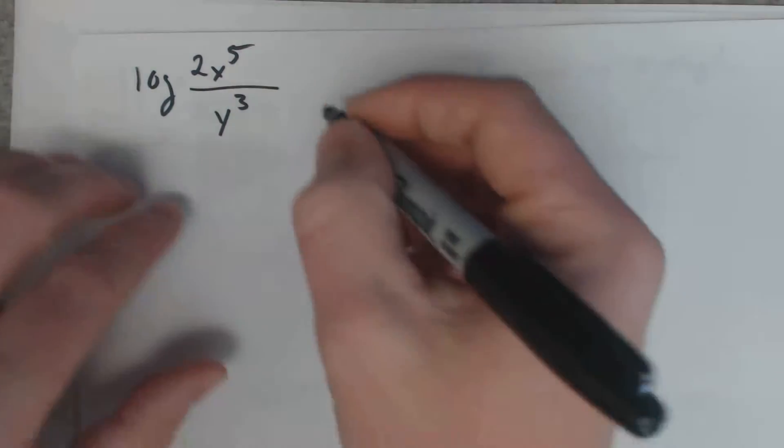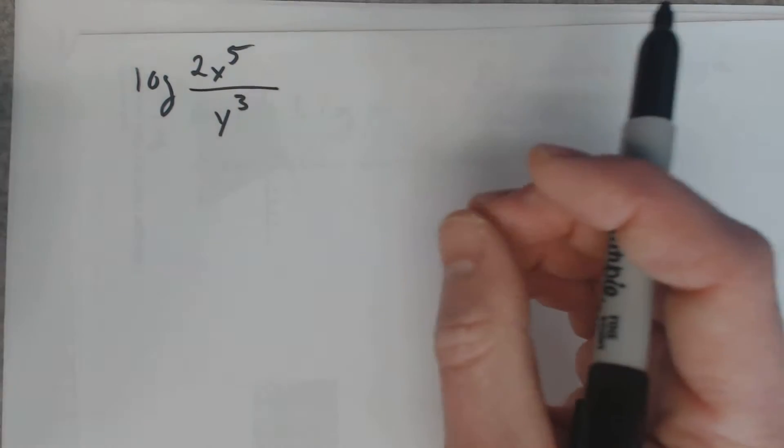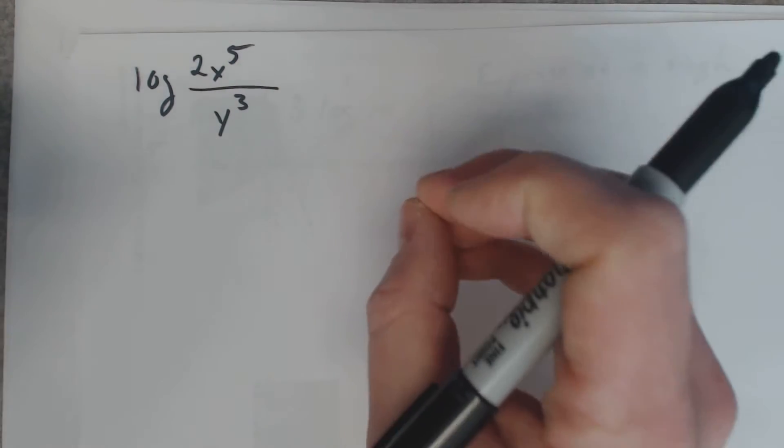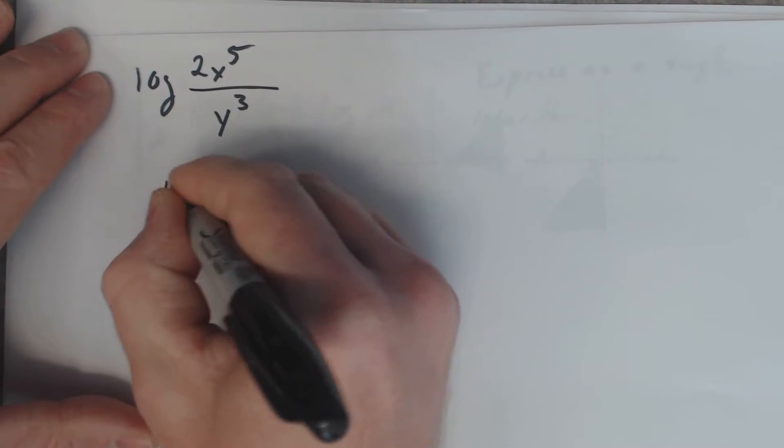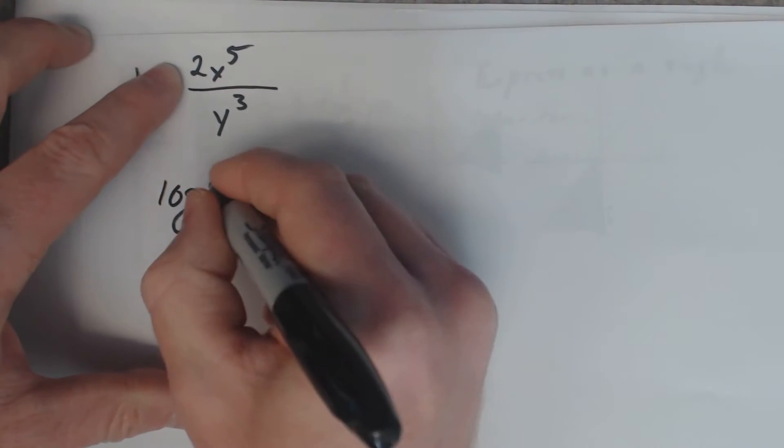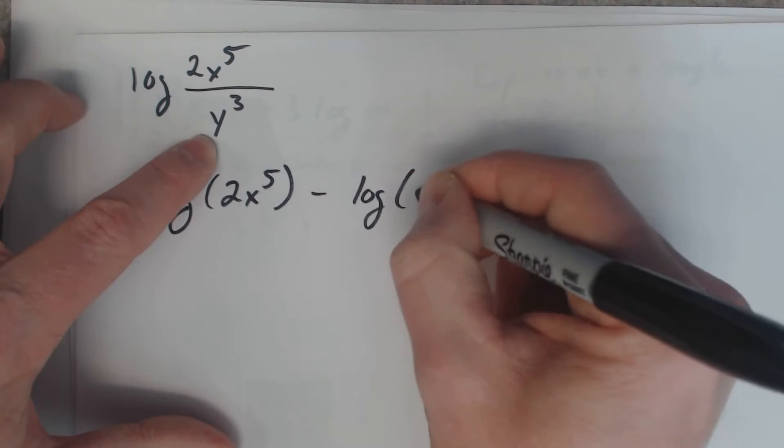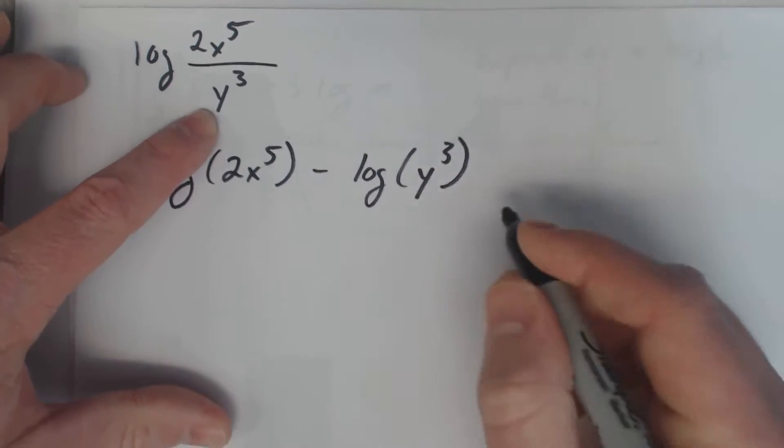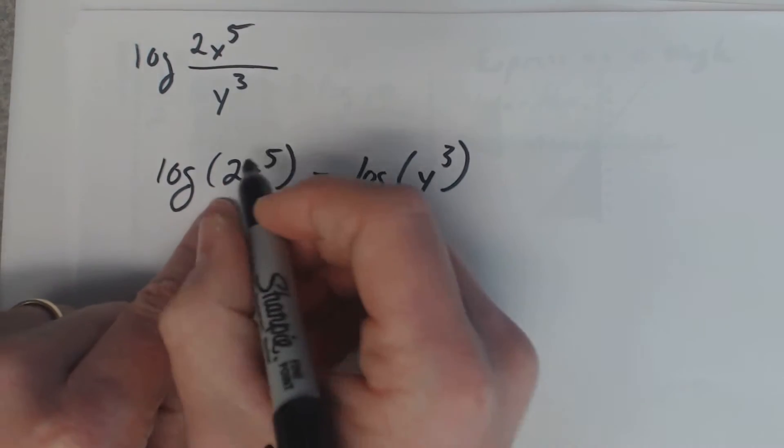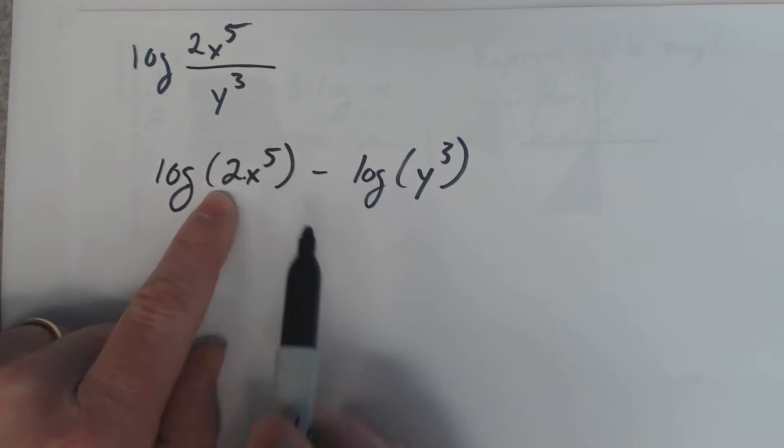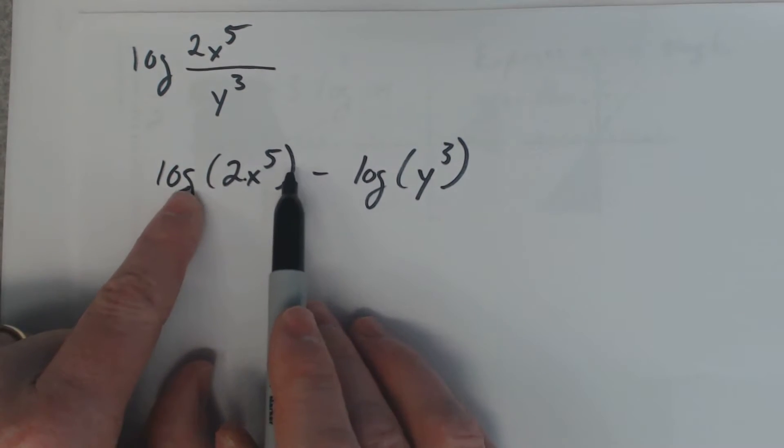Expand it out. The property says that if I see division, I can split those two pieces up and say subtract between the two. It would be log at this top minus log at this bottom. I see a multiplication in here. Remember, we said at the very tail end of the last video, you can split that up with addition.